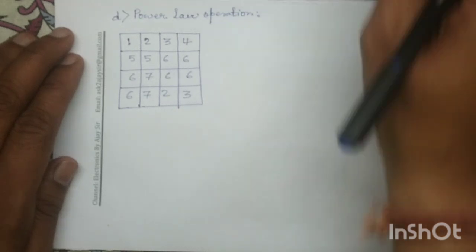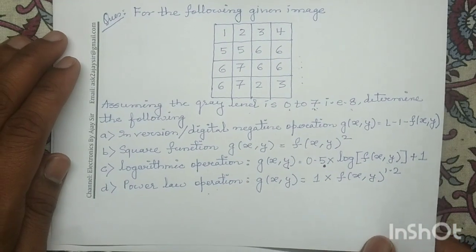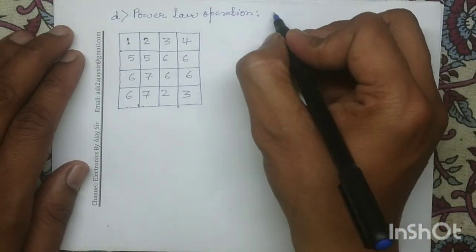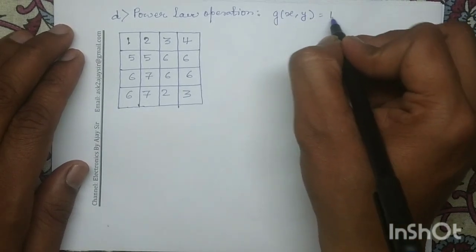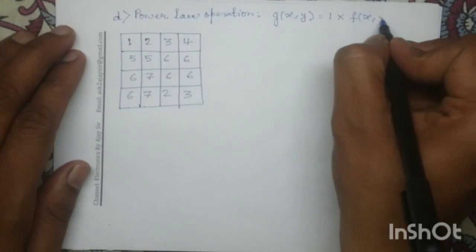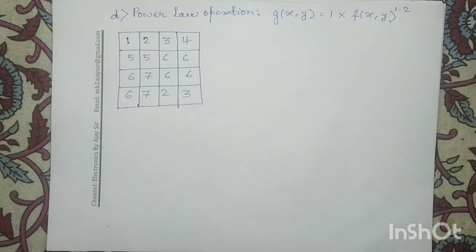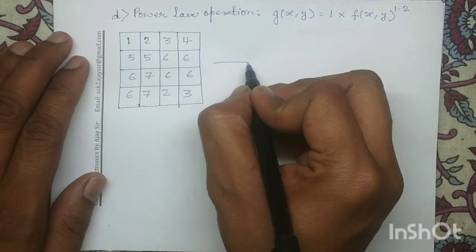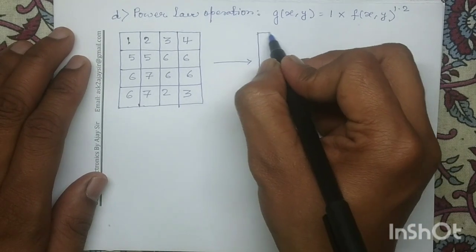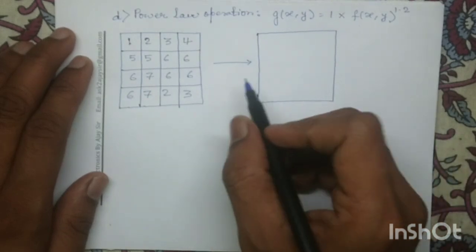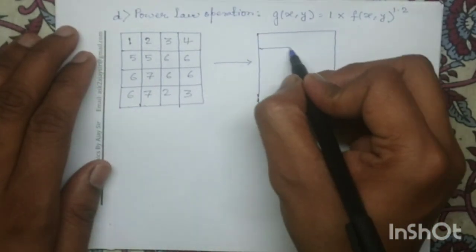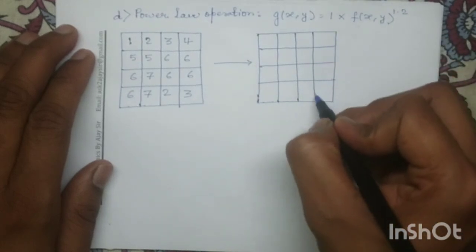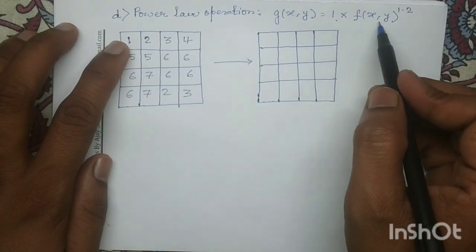Next we will perform the power law operation. The mathematical equation of the power law operation is g(x,y) equals 1 times f(x,y) to the power 1.2. We will apply this transformation function on each pixel of this given input digital image. Since the dimension of the input image is 4×4, the output image dimension is also 4×4. At each pixel I will apply the equation 1 times f(x,y) to the power 1.2.